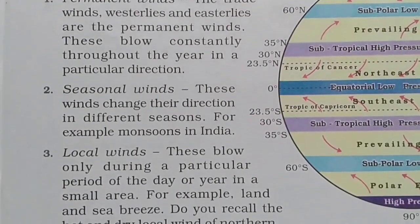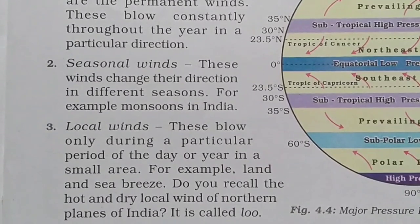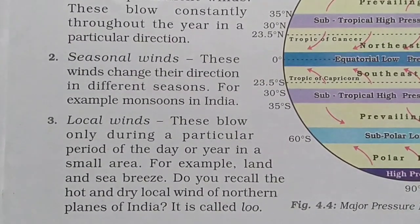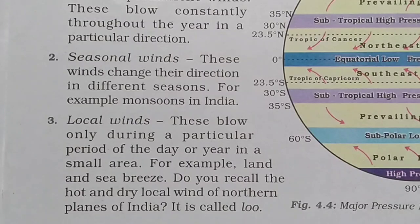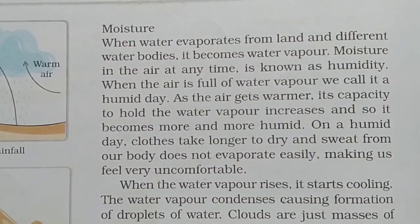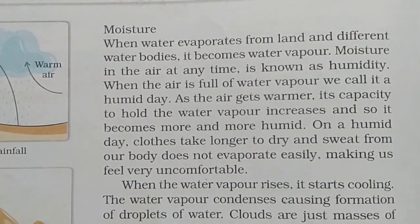The third type is local wind, which blows only during a particular period of the day or year in a small area. Examples are land and sea breeze. You should also recall the hot and dry local winds of the northern plains of India, which are called 'Loo'.